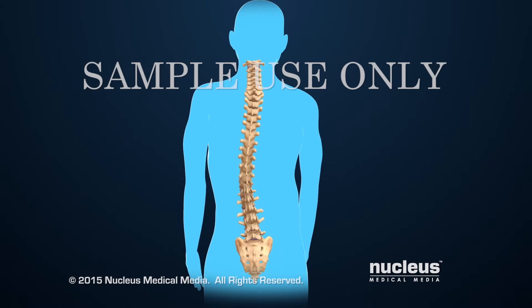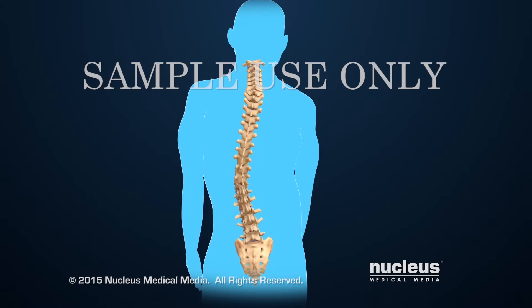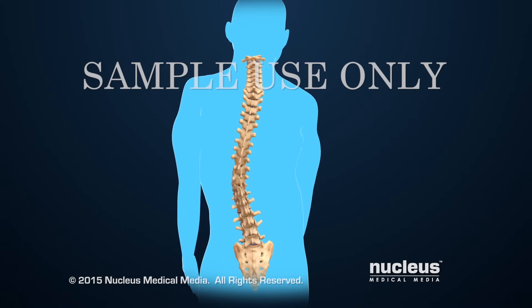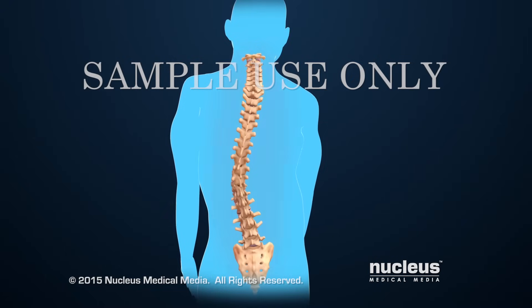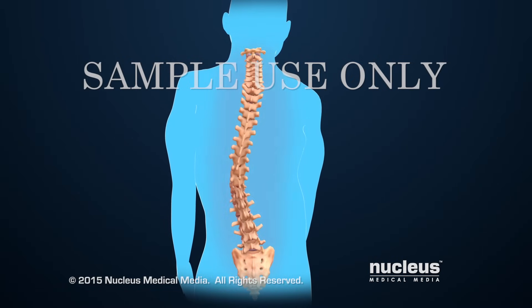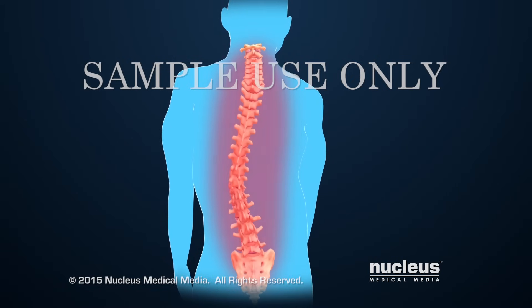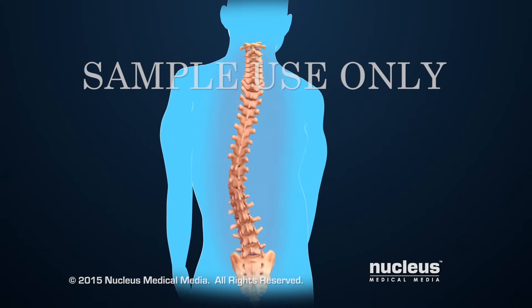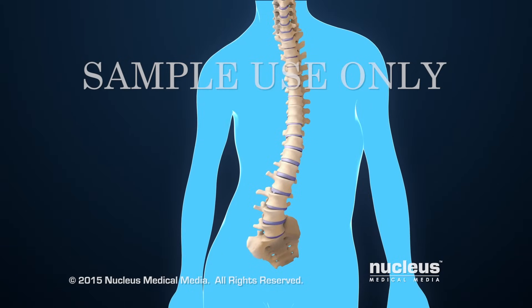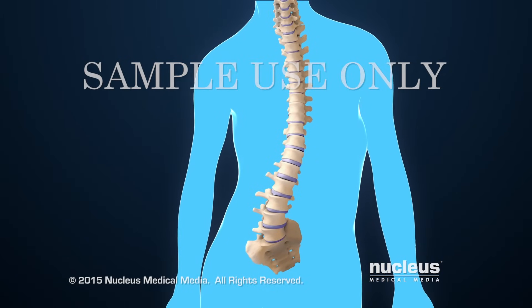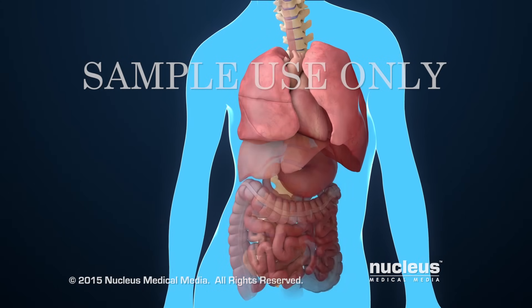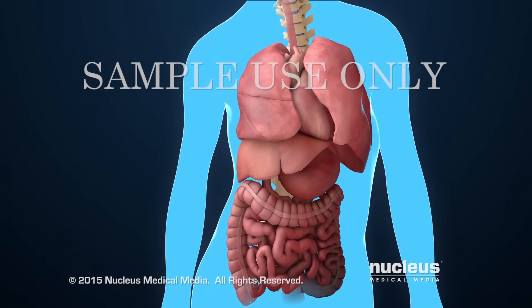During childhood, the spinal curve usually becomes worse during periods of rapid growth. If the curve becomes severe, it can cause problems with posture, walking, and back pain. It can also cause the internal organs to become cramped for space, causing heart, breathing, and digestion problems.